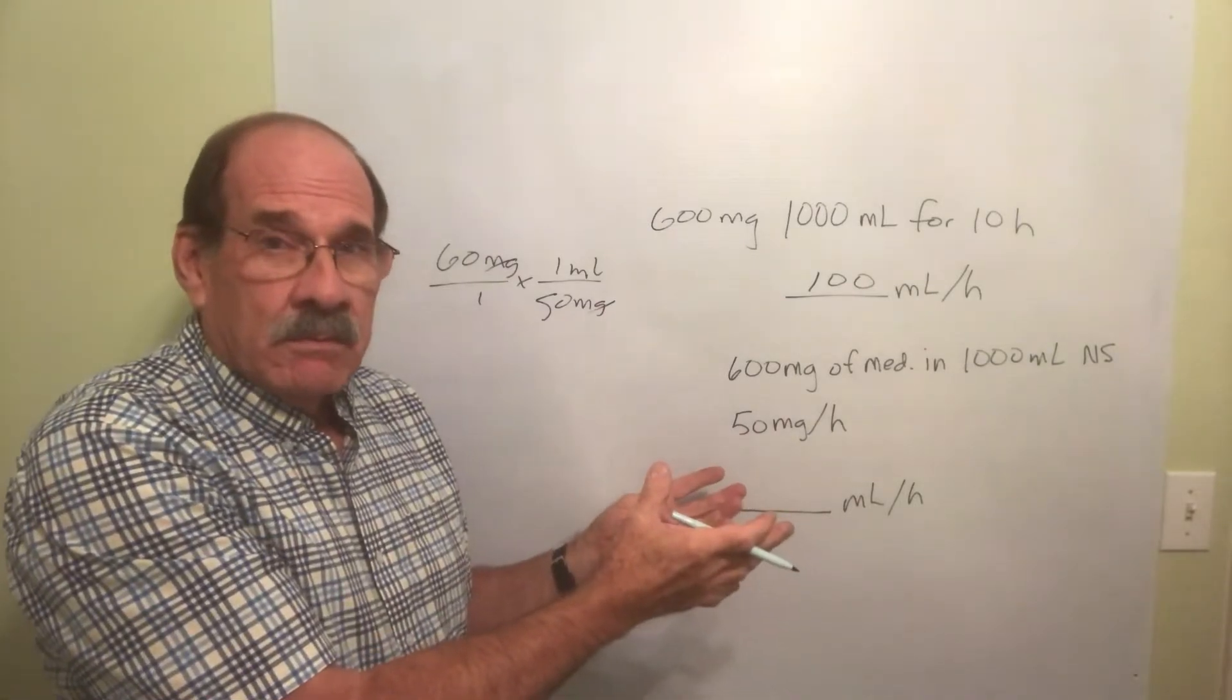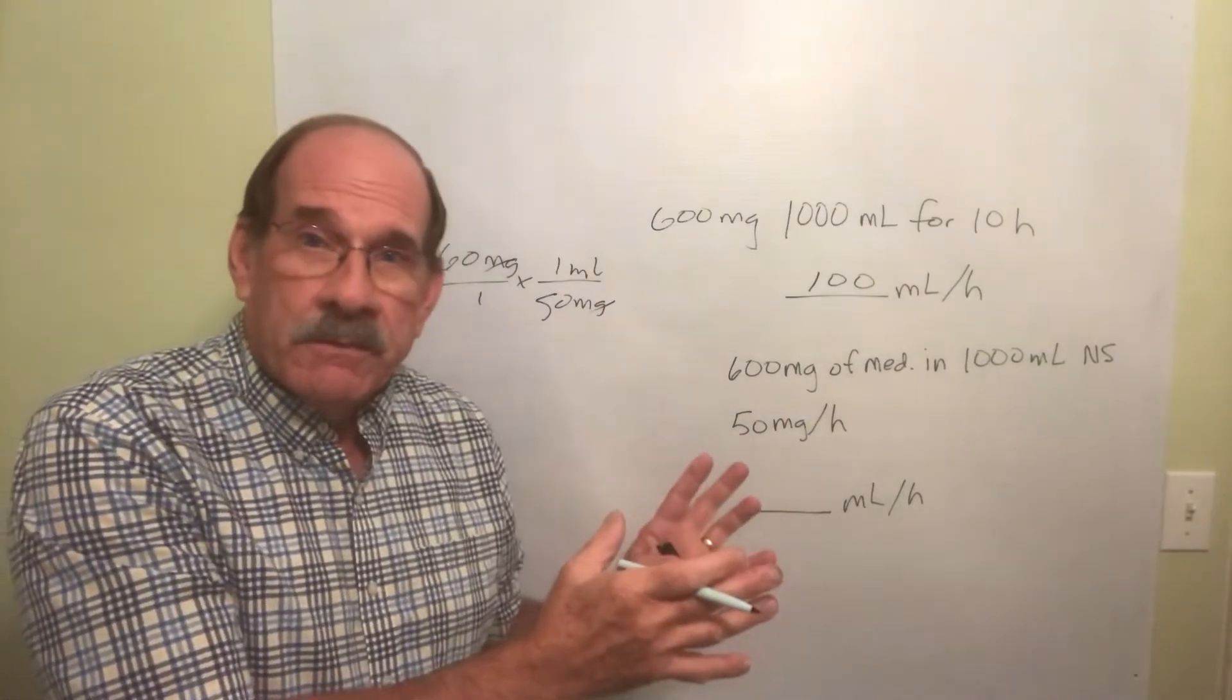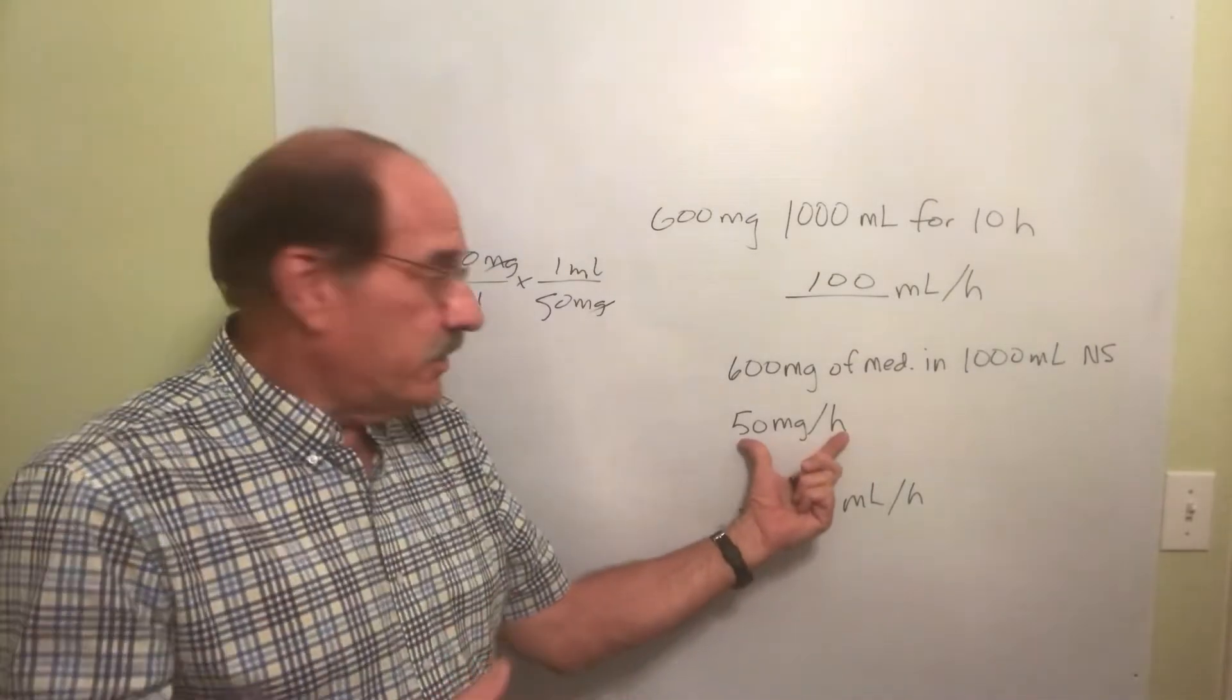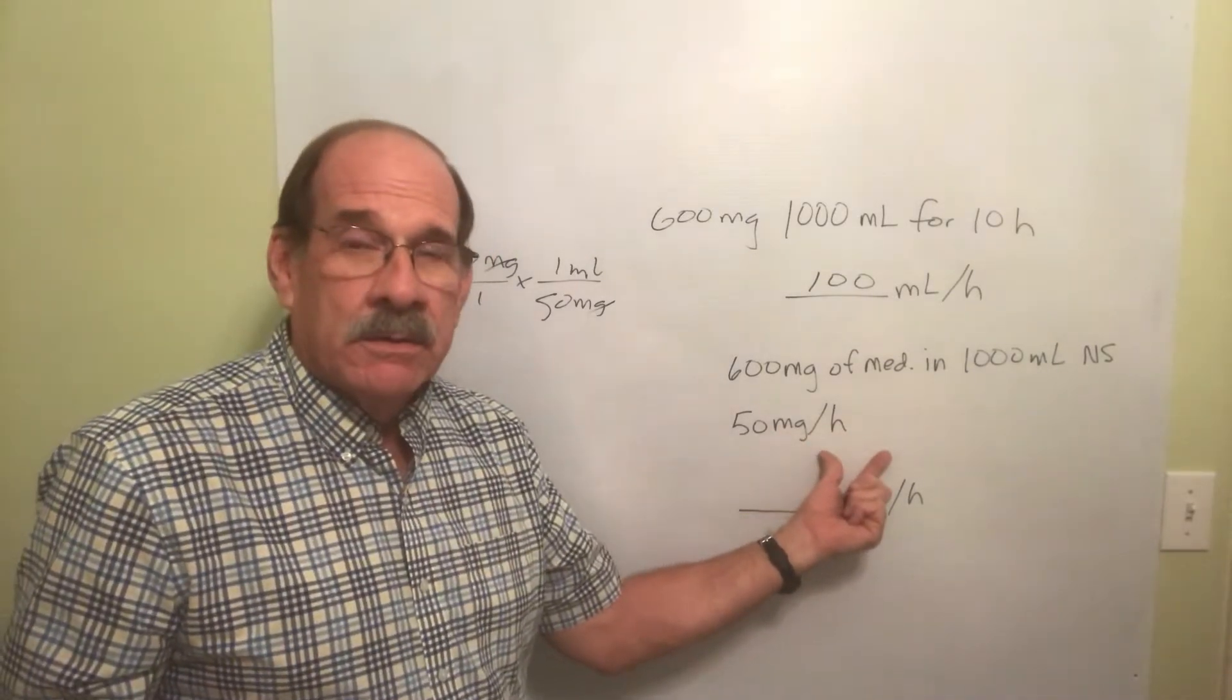We're doing something very similar here. First, what is the order? The order is this: I'm ordered to give 50 milligrams per hour to that patient, meaning every hour that goes by the patient will get 50 milligrams of the medicine.